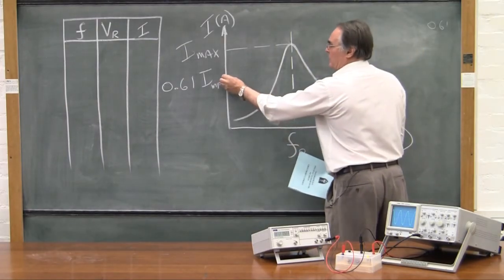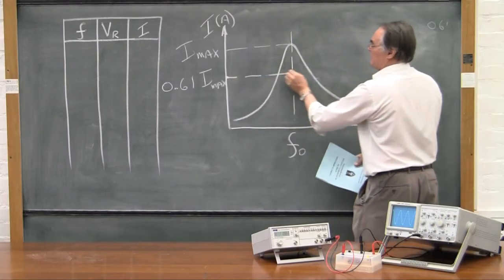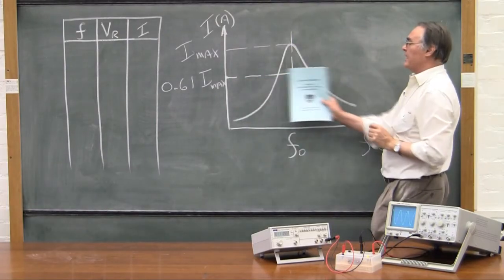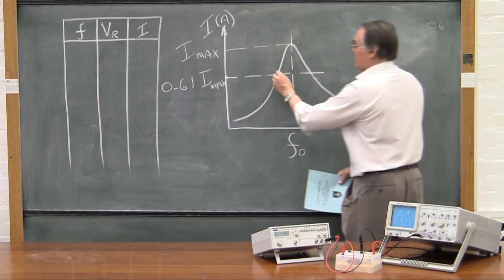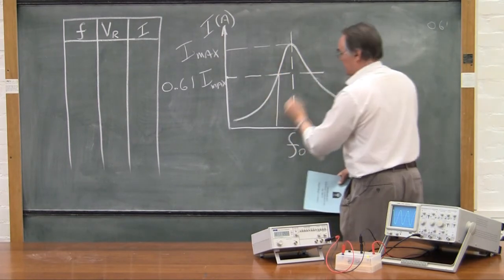From this point you draw a line and where this line cuts your curve you drop two lines down like that.